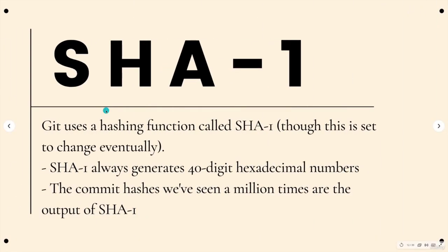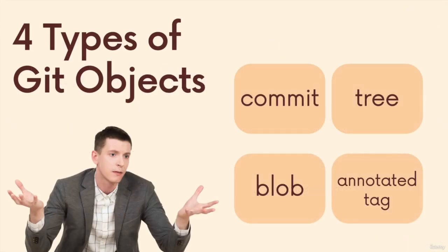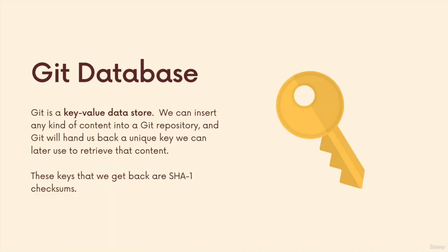If you recall, I mentioned that there are four types of Git objects — four types that Git can store, including commits. But then there's also trees and blobs and annotated tags, all four of which are hashed using SHA1. We're going to get to all four of those object types throughout the course of this section.